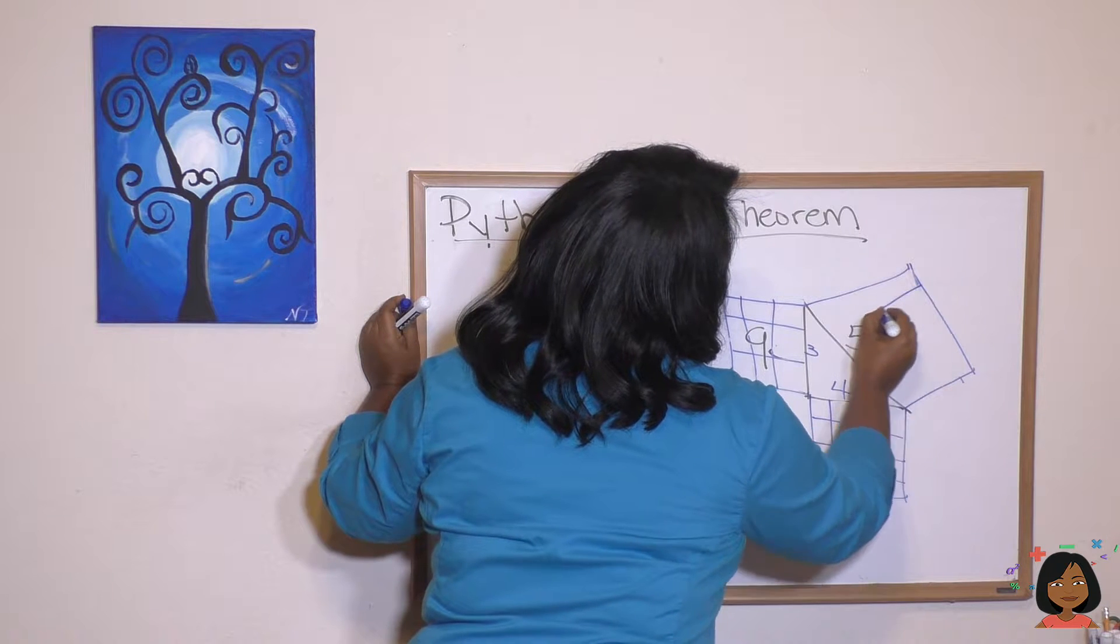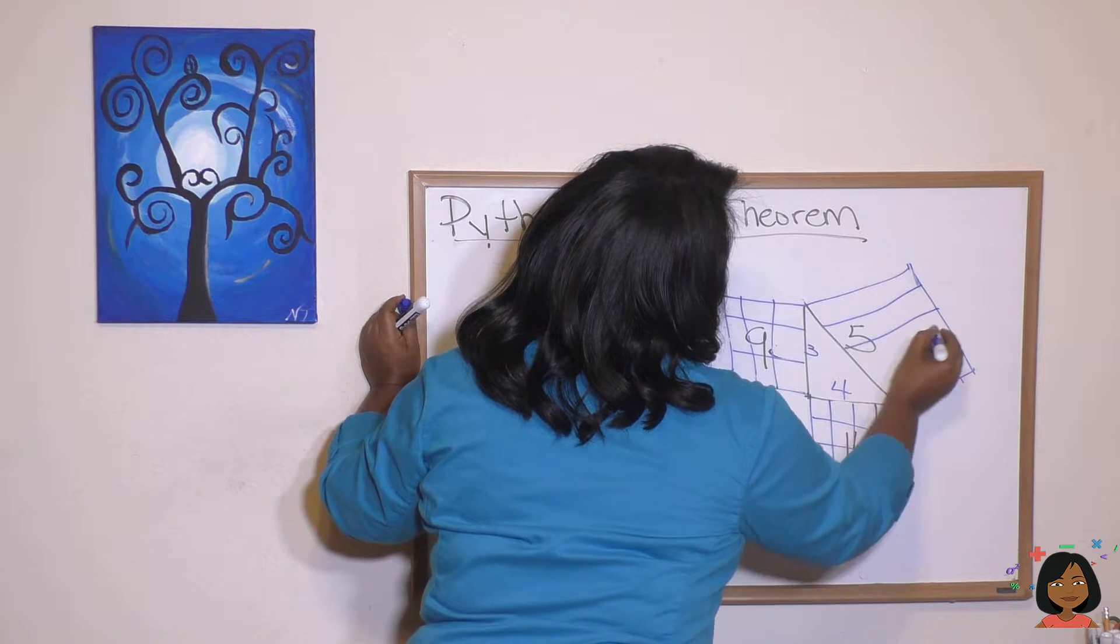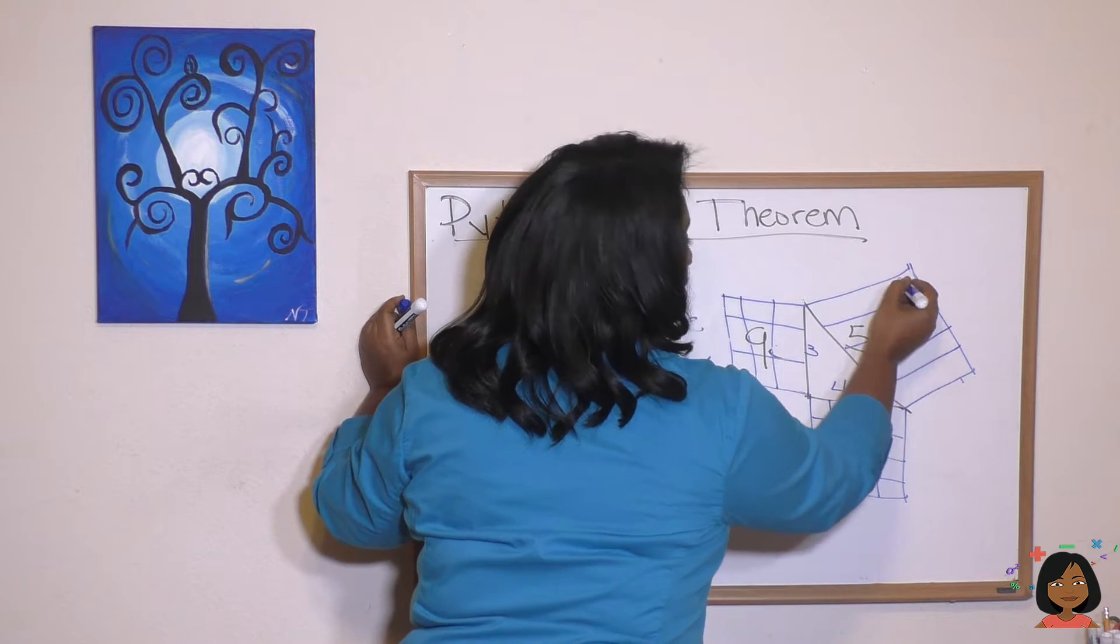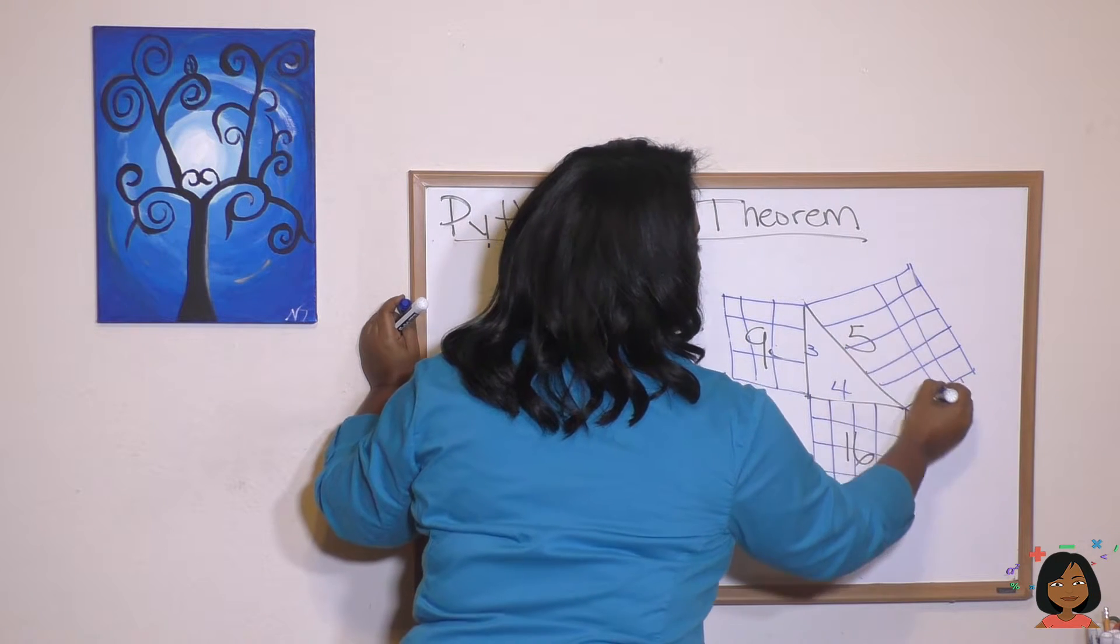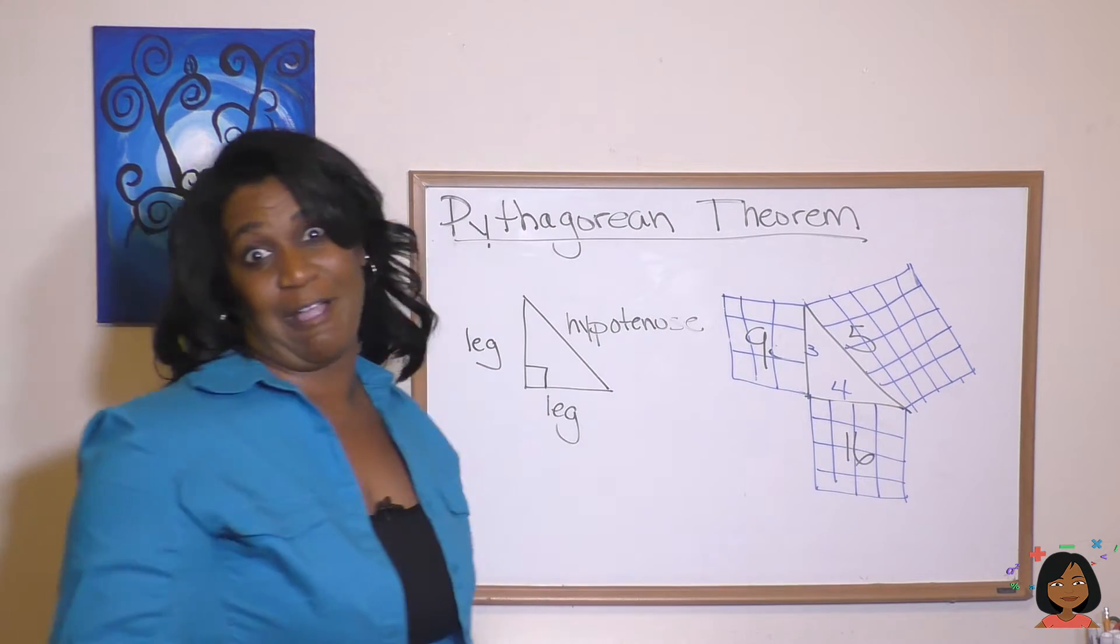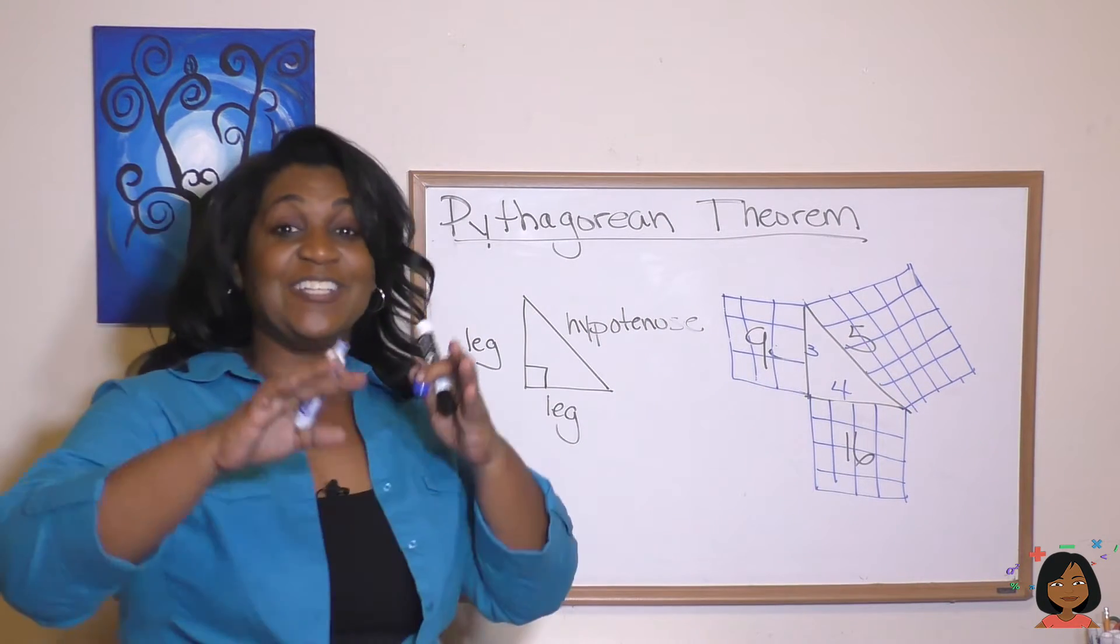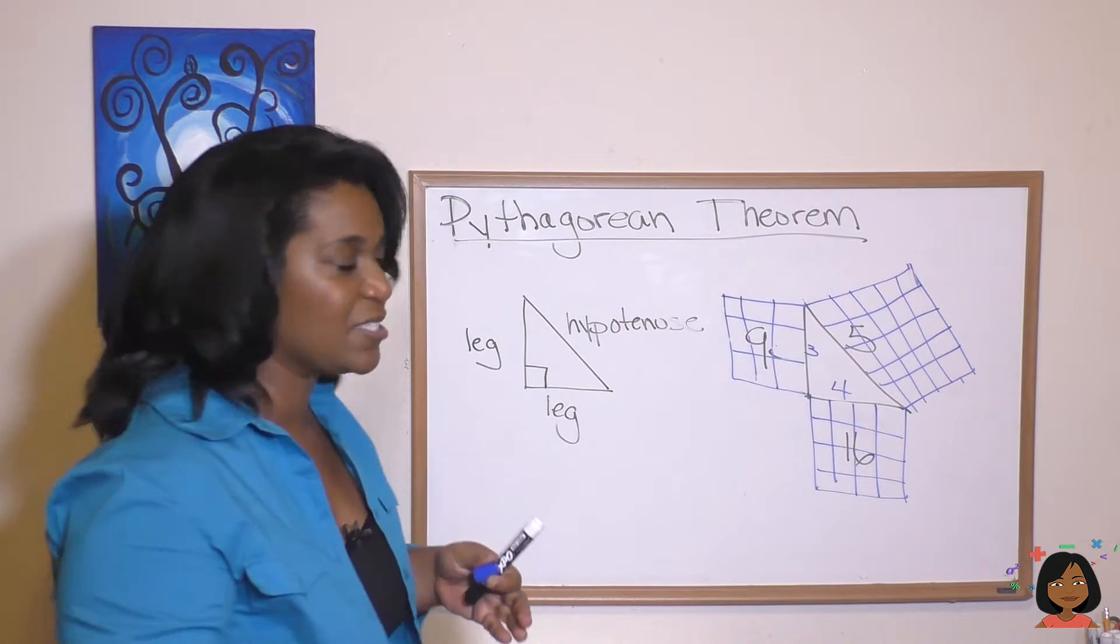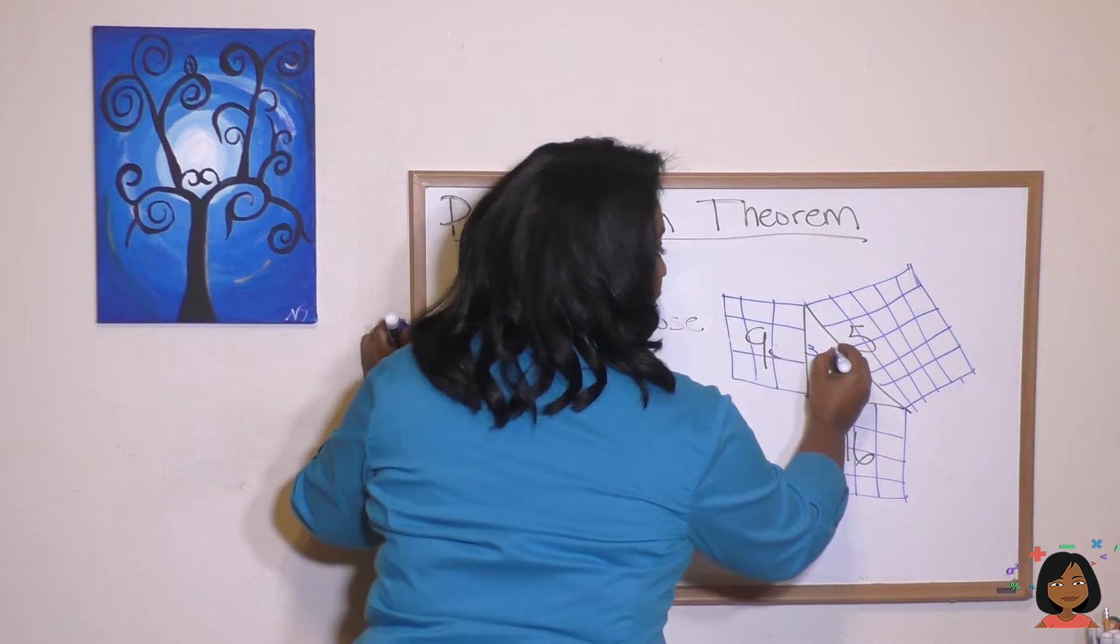All right. See if I can draw 5 of these. It's not so easy to draw on the board. Don't judge. 1, 2, 3, 4, 5. Here we go. Oh, that's rough. Maybe I should have gotten a ruler out for this one. Okay. Just imagine that they're nice and square and equal. But the point is that there's 5 on this side.